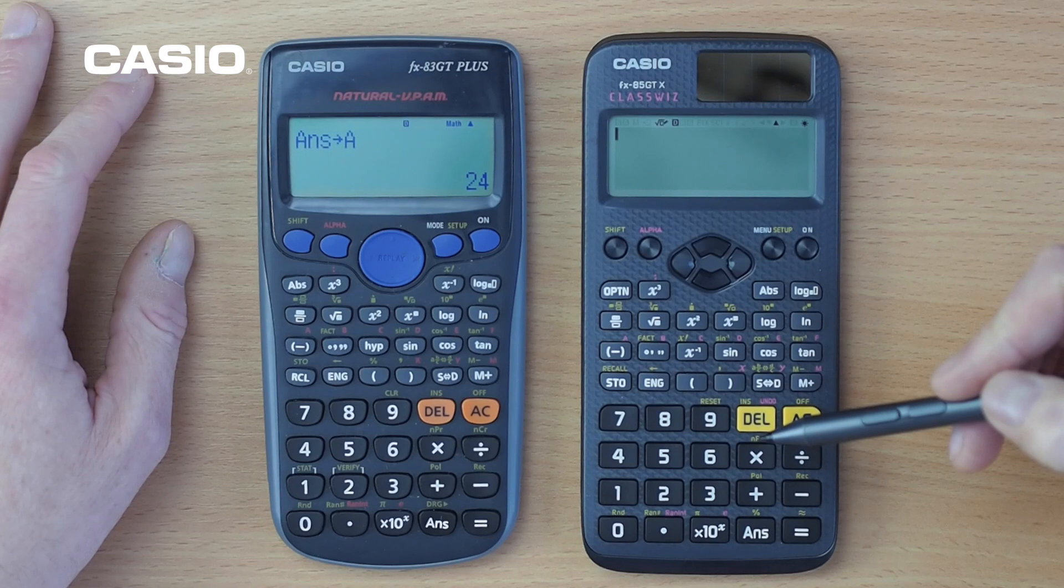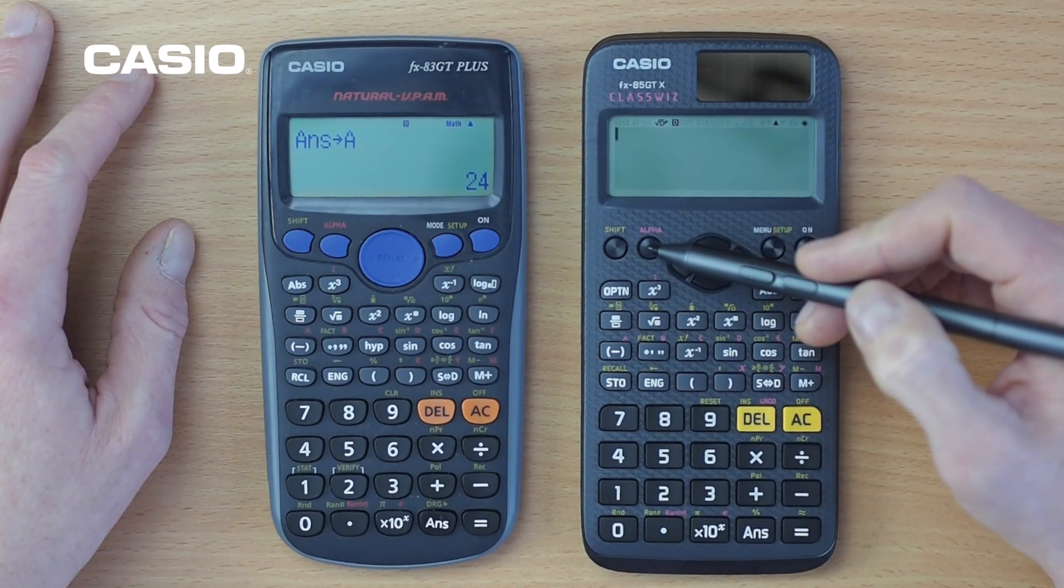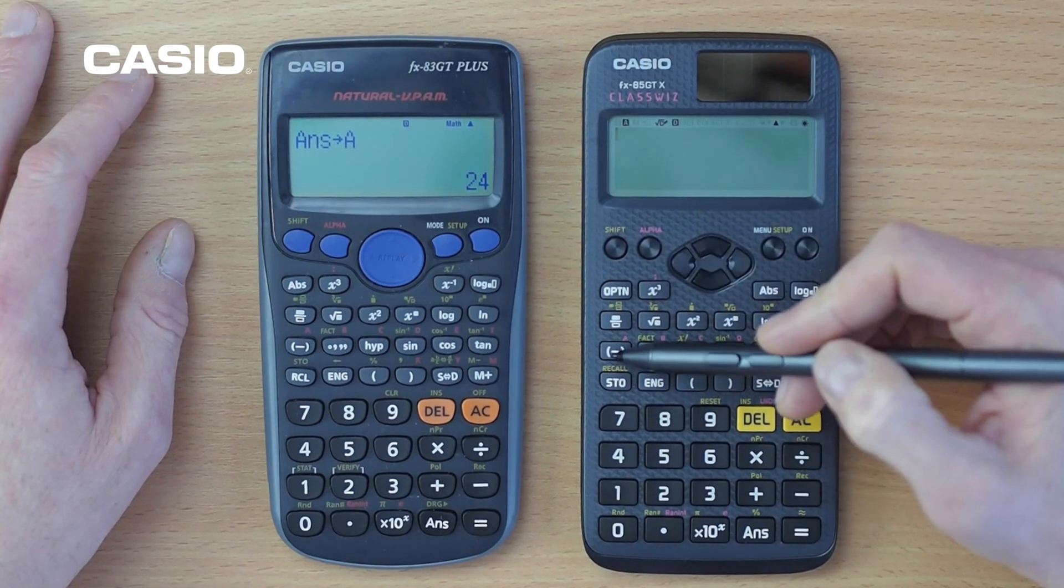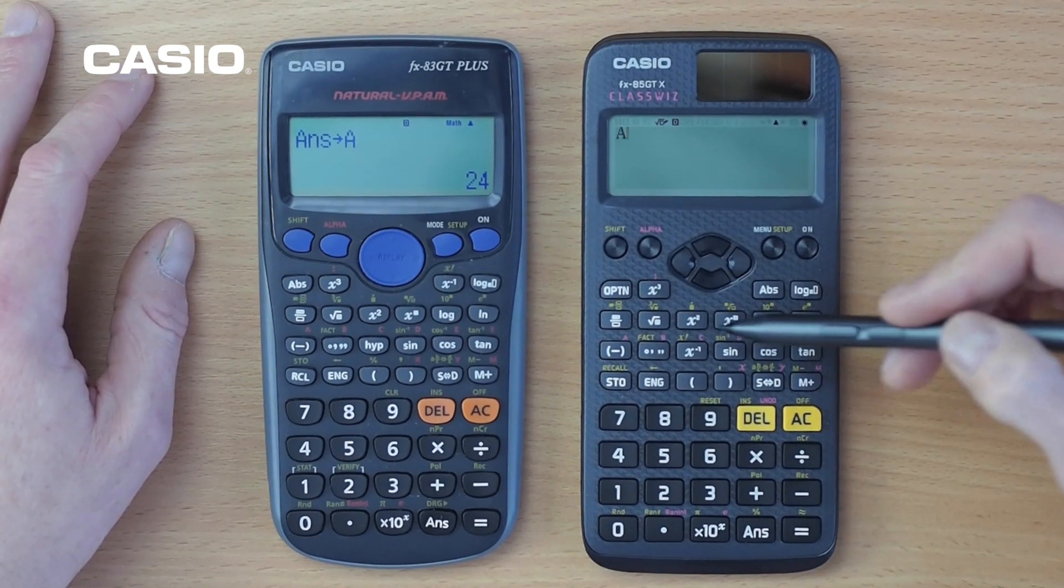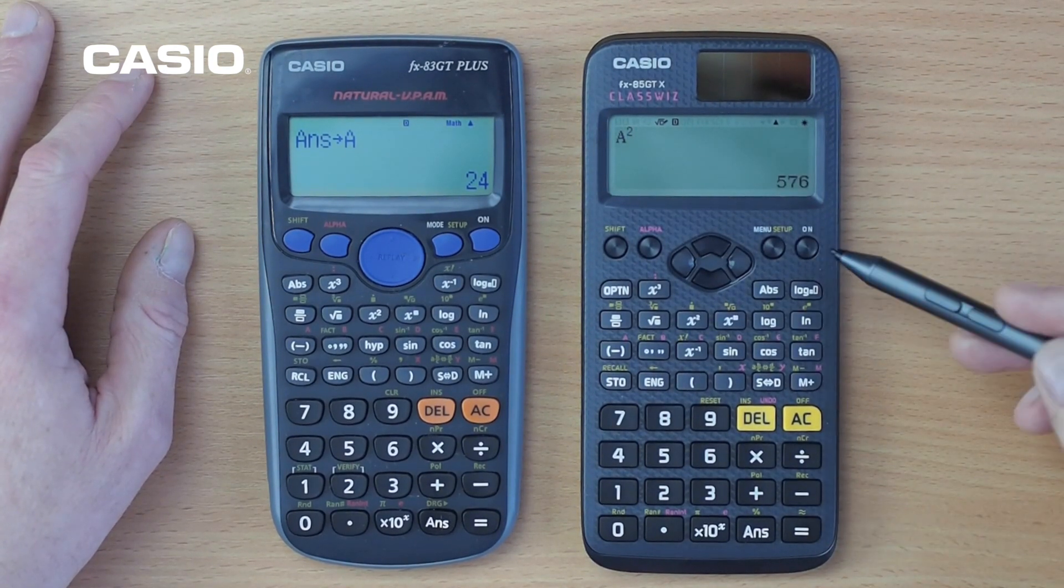Now there's two ways that we can recall the data. So as in the previous calculator, we could go alpha A and maybe we want to manipulate that data. So let's square it. There's alpha A squared.